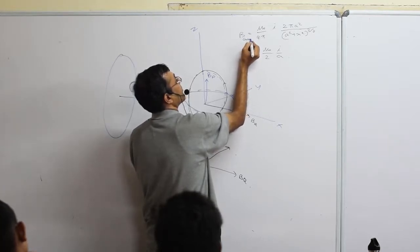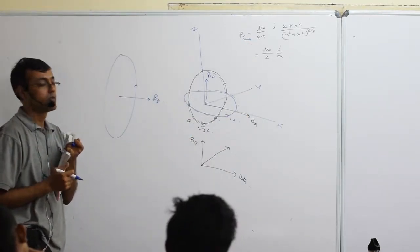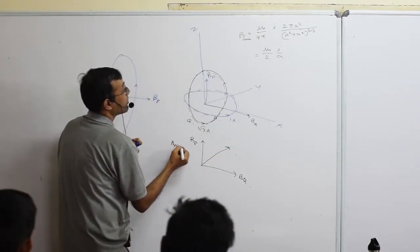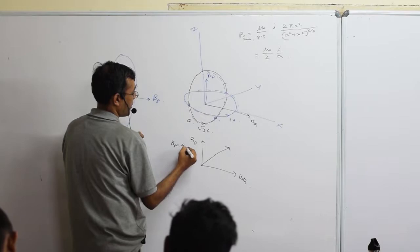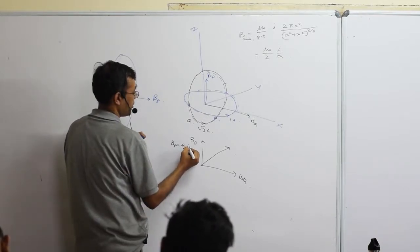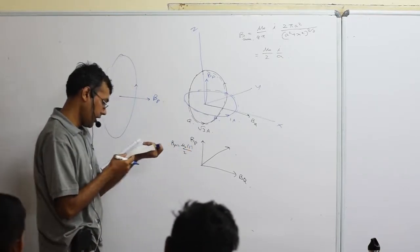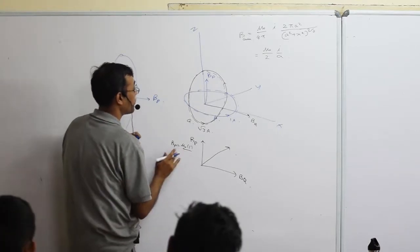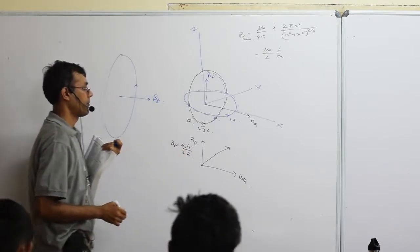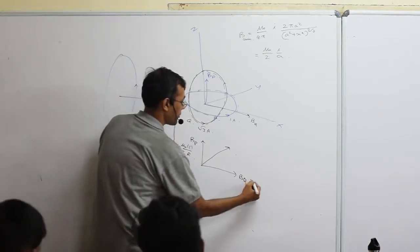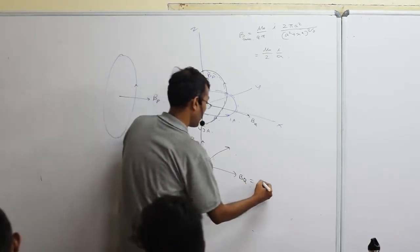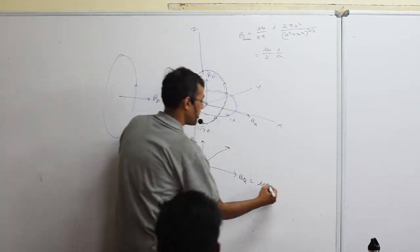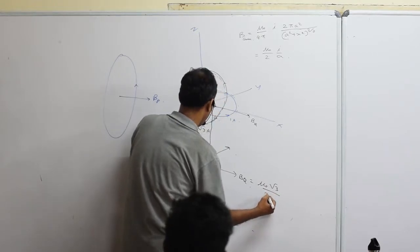So B at the center is μ₀I / 2a. Applying this: B_P = μ₀ · 1 / 2R = μ₀/2R. No radius value is given so we use capital R. B_Q = μ₀√3 / 2R, simply applying the same formula with current √3 and radius R.